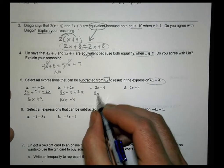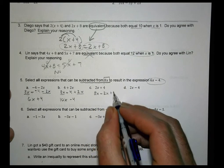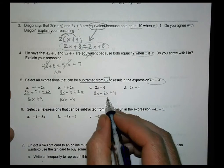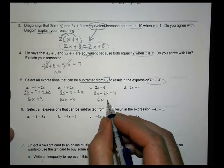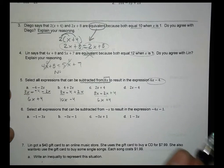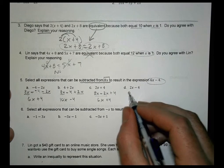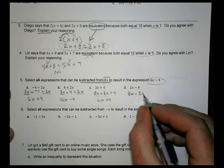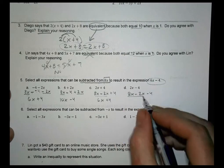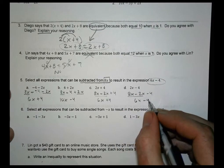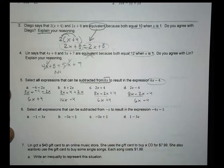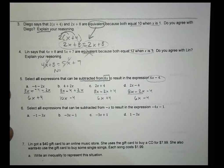Here we have 8x minus 2x plus 4. 8 minus 2 is 6x. That looks good. But I have a plus 4, so not going to work out. And then finally, 8x minus 2x minus 4. Combine the like terms to get a 6x minus 4. And that's the one we're looking for right there, isn't it? Okay, number 6.